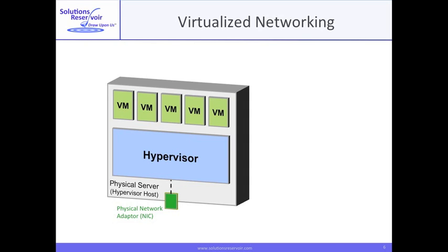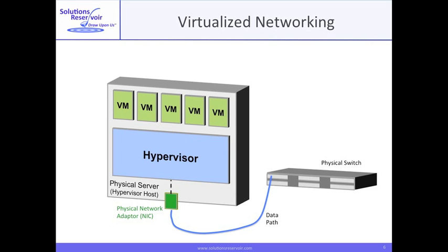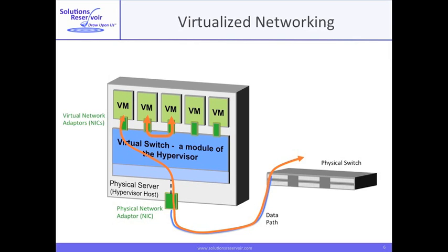Through the hypervisor, a number of VMs are supported on this virtualized physical server, which is attached to a switch. A module of the hypervisor creates a virtual switch. The hypervisor also creates virtual network adapters through which the virtual machines communicate with or through the virtual switch, and eventually through the physical switch. Just like a physical server can have more than one network adapter, the hypervisor can assign more than one virtual network adapter to a VM. The hypervisor must assign them valid MAC addresses and private or public IP addresses for their ultimately real communications.